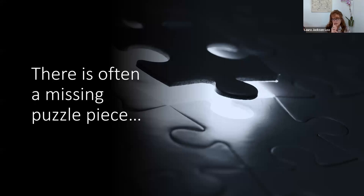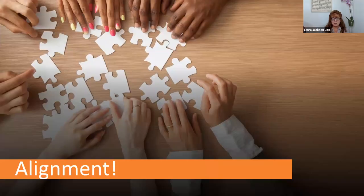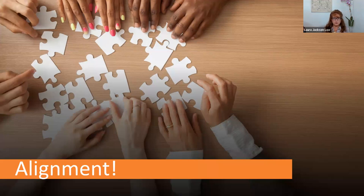There's still a missing piece: alignment. All of these pieces — mission, message, and market — have to be aligned. You can't have a message here and something over there that doesn't match your market. Once you put these pieces together, it's like seeing the whole puzzle — all of the languaging, the programs, the talk titles, the courses, the sound bites. You look at all of this to make sure everything is aligned and working in harmony.